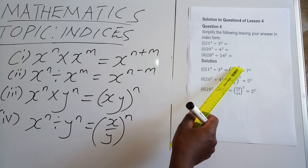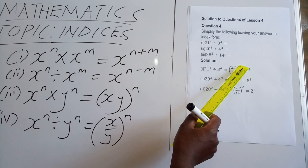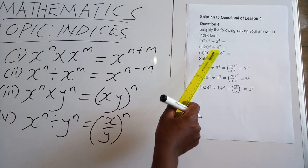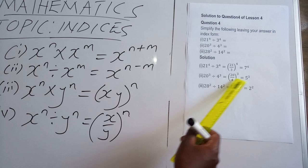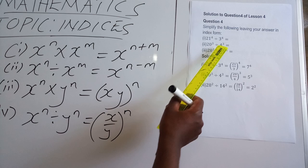What do you get? We divide the bases, which are 21 and 3, and raise that outcome to that similar power 4. The outcome will be 7 power 4. Number two: 20 power 3 divided by 4 power 3. We get 20 over 4 raised to that similar power 3. The outcome will be 5 power 3.